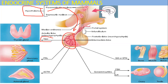Thyroid stimulating hormone (TSH) is released from the anterior pituitary and ultimately affects the thyroid gland. TSH production is under the regulation of the hypothalamic hormone thyrotrophin-releasing hormone, also called thyrotrophin-releasing factor. So we are now discussing the thyroid gland and its secretions.